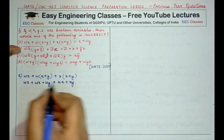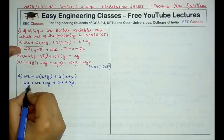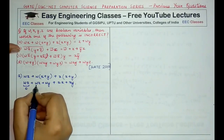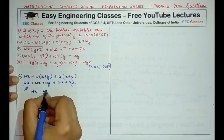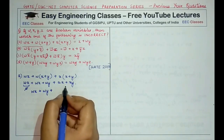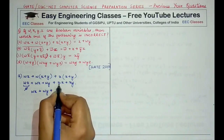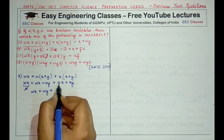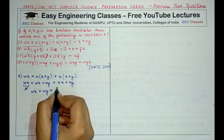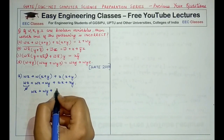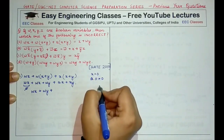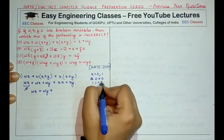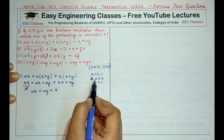To reduce: wx + wx simplifies to a single wx term, because if wx is 0 then 0+0=0, and if 1 then 1+1=1. So we have wx + wy + x·x. Now x·x equals x only — if x=0 then 0·0=0, and if x=1 then 1·1=1.